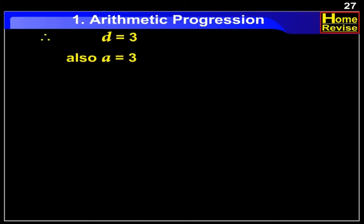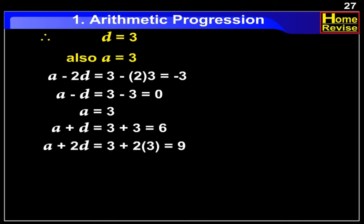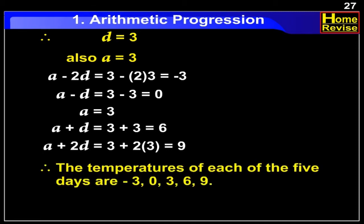Now, we shall find out the temperatures from Monday to Friday. A minus 2D is equal to 3 minus 6, equal to minus 3. A minus D is equal to 3 minus 3, equal to 0. A is equal to 3. A plus D is equal to 3 plus 3, equal to 6. A plus 2D is equal to 3 plus 6, equal to 9. Therefore, the temperatures of each of the 5 days are minus 3, 0, 3, 6, and 9.